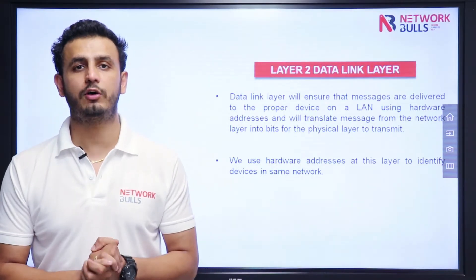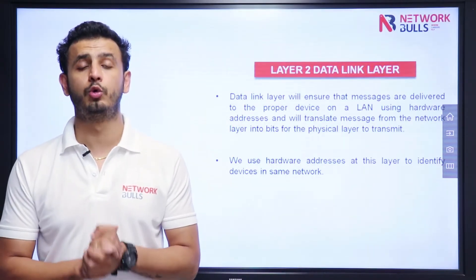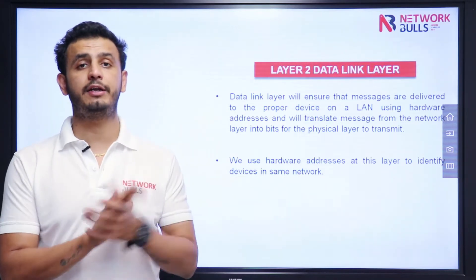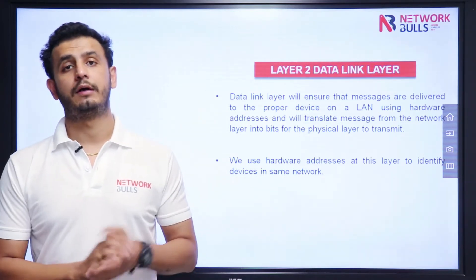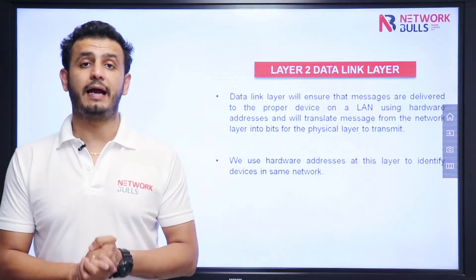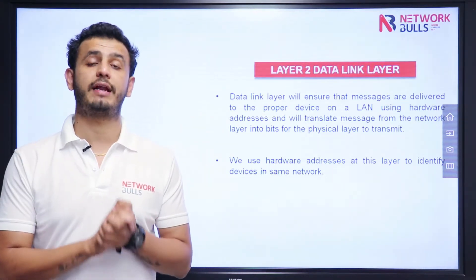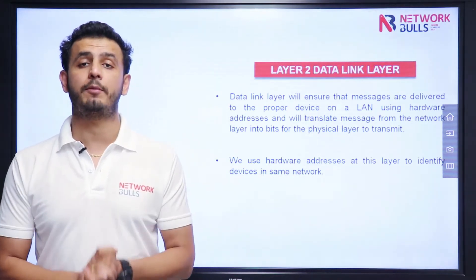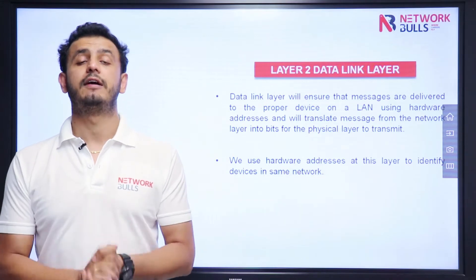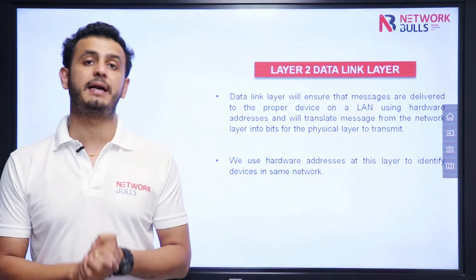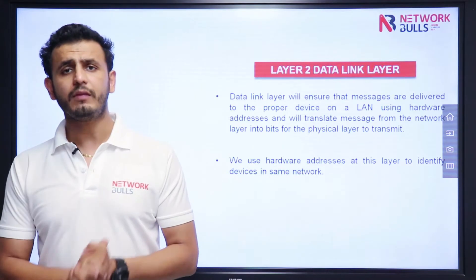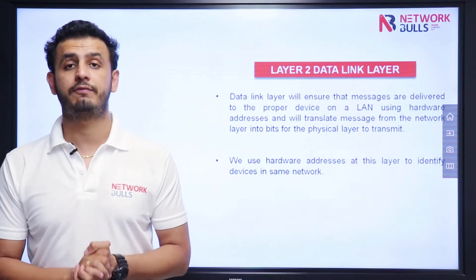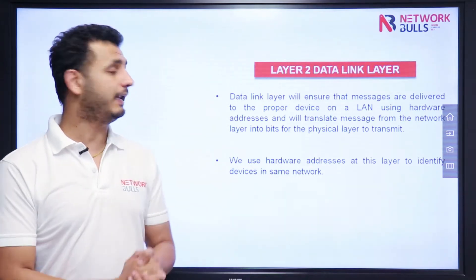In this video we will discuss Layer 2, the Data Link Layer of the OSI model. In the previous videos we discussed Layer 7 Application Layer, which acts as an interface between user and computer; Layer 6 Presentation Layer, which handles formatting of data; Layer 5 Session Layer, where different sessions are maintained; Layer 4 Transport Layer, where we add port numbers; and Layer 3 Network Layer, where we add IP addresses.